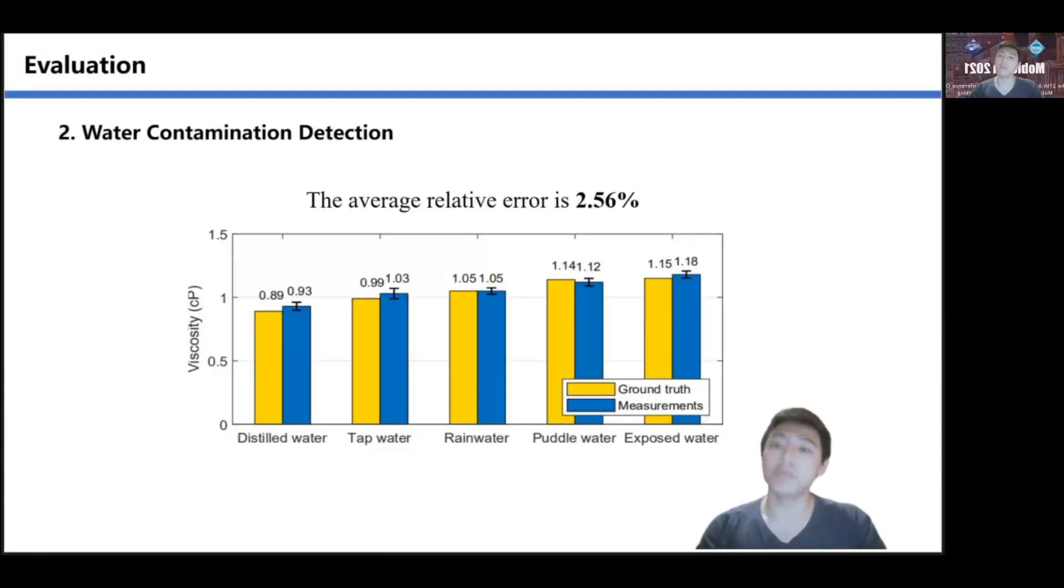The mean relative error is 2.56%, which indicates that if the unknown liquid's viscosity is higher than that of potable water by 0.1 cP, we can be confident that the unknown liquid is non-potable.